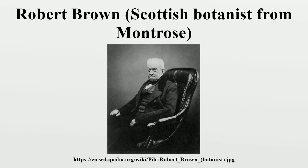In a paper read to the Linnean Society in 1831 and published in 1833, Brown named the cell nucleus. The nucleus had been observed before, perhaps as early as 1682 by the Dutch microscopist Leeuwenhoek, and Franz Bauer had noted and drawn it as a regular feature of plant cells in 1802, but it was Brown who gave it the name it bears to this day. Neither Bauer nor Brown thought the nucleus to be universal, and Brown thought it to be primarily confined to monocotyledons. After the division of the Natural History Department of the British Museum into three sections in 1837, Robert Brown became the first keeper of the Botanical Department, remaining so until his death. He was succeeded by John Joseph Bennett.